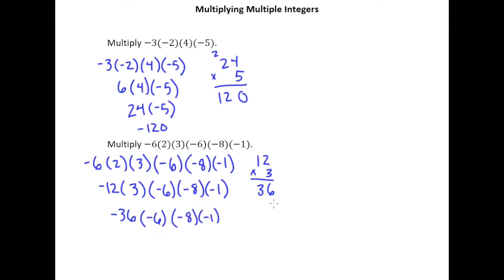And then I've got to multiply 36 and 6 together. Do that. And that's going to give me 216. And it's a negative times a negative, so that will be a positive 216.